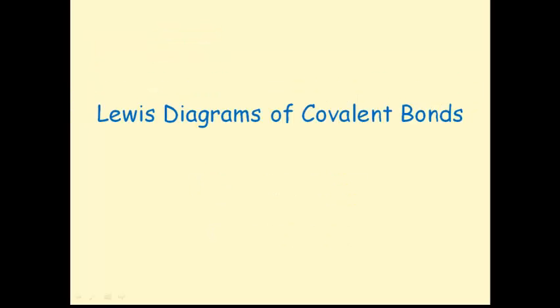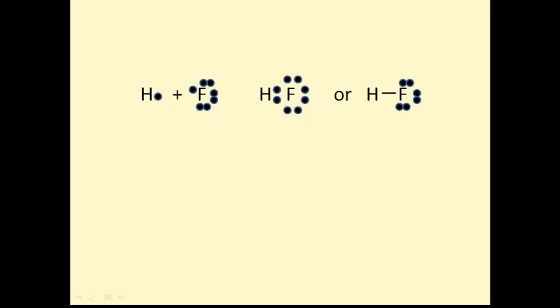Lewis diagrams of covalent bonds. Here we see another example of how a Lewis dot diagram can help us draw a bond structure. And it's not a lot different for covalent bonds than it is for ionic bonds. We're going to make a compound called hydrogen fluoride, made of course of two nonmetals since it's a covalent bond. You can see that hydrogen has one valence electron, and chlorine has seven out of eight. In this case, the electrons are going to be shared.